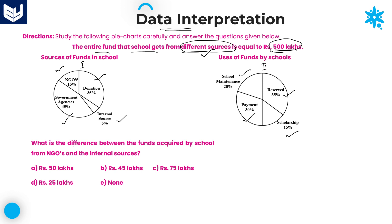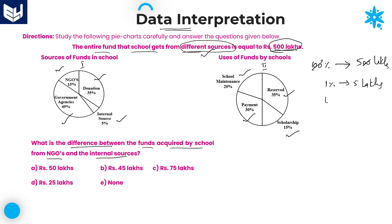The first question is: what is the difference between funds acquired by the school from NGOs and from internal sources? Before solving this, the entire pie chart is 100%, and this 100% value is given as 500 lakhs. That means 1% is equal to 5 lakhs, and 10% is equal to 50 lakhs. Based on the question, you can take whatever values you want.